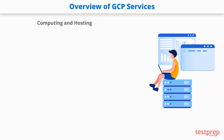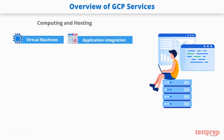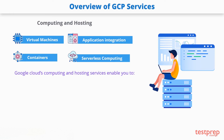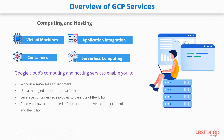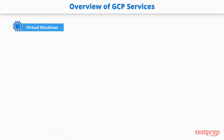First, let's take a look at the compute services offered by Google Cloud. There are four main services in the compute category: virtual machines, application integration service, container service, and serverless computing. Google Cloud's computing and hosting services enable you to work in a serverless environment, use a managed application platform, leverage container technologies, and build your own cloud-based infrastructure for maximum control and flexibility.